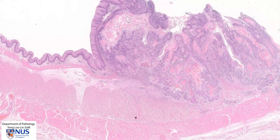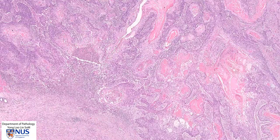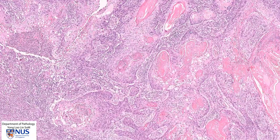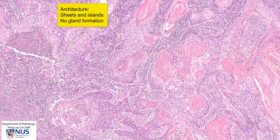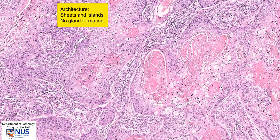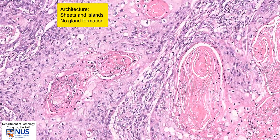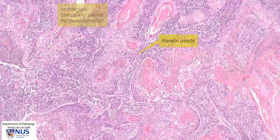This is an invasive tumour. On higher magnification, we can see that the cells form very large sheets and islands. They are not gland-forming. If you notice, there are a lot of these swirly things within the sheets of invasive cells — they are very pink in colour and these are keratin pearls. The presence of keratin pearls is a feature of squamous differentiation.